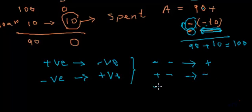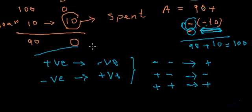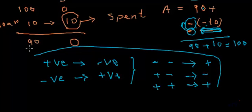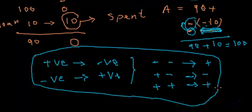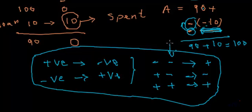We can conclude: negative and negative becomes positive; positive and negative becomes negative; and as we learned in the last lesson, positive and positive is positive. These are the conversions of signs that happen when we do addition, subtraction, multiplication, or division. We will refer to these rules in multiplication and division as well.